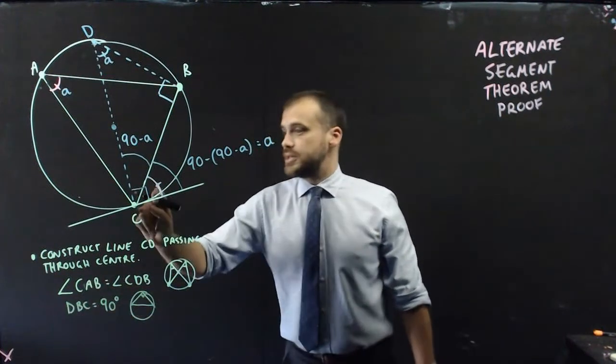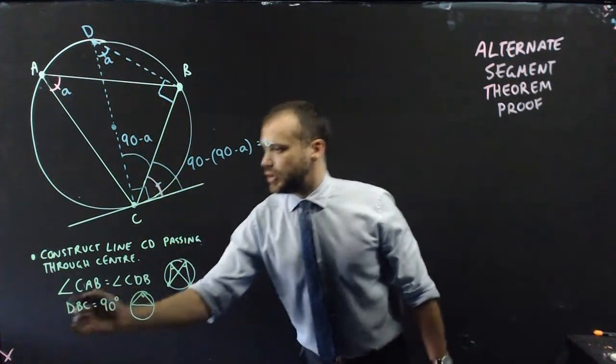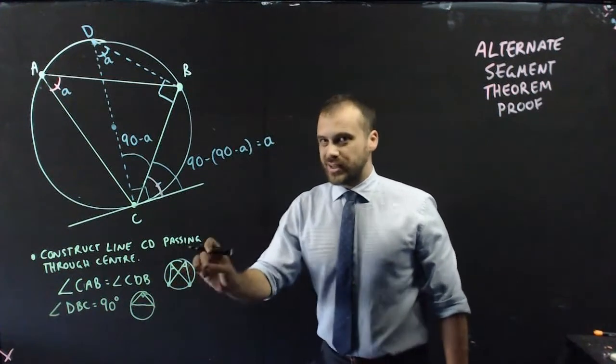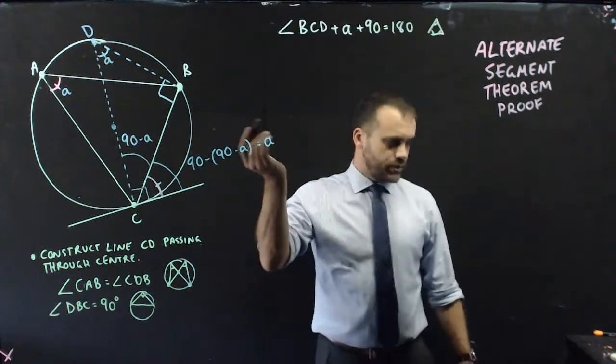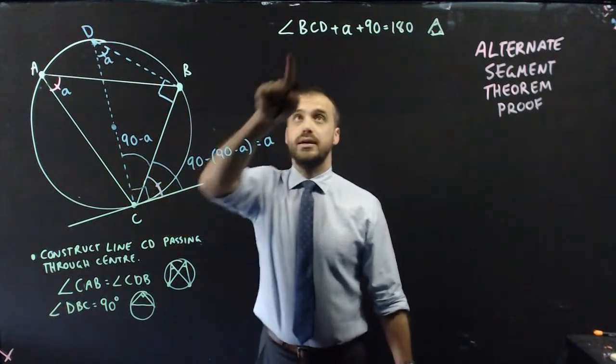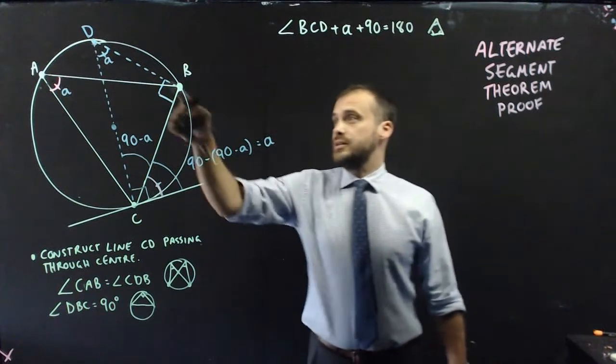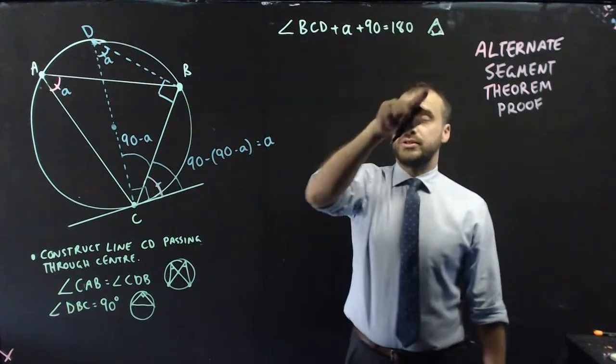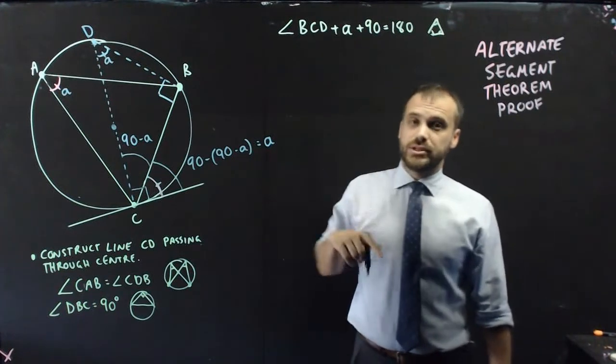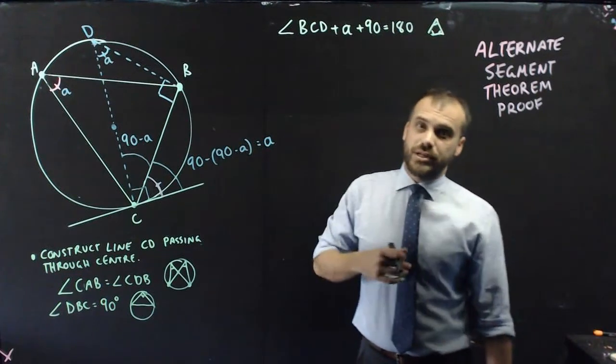After that, DBC equals 90 degrees, that's an angle, because of our angle in a semicircle. From there, we can say that angle BCD, this one here, angle BCD plus A plus 90 equals 180 because of the internal angles of the triangle. And you can rearrange that very simply to find that angle BCD is going to be equal to 90 minus A.